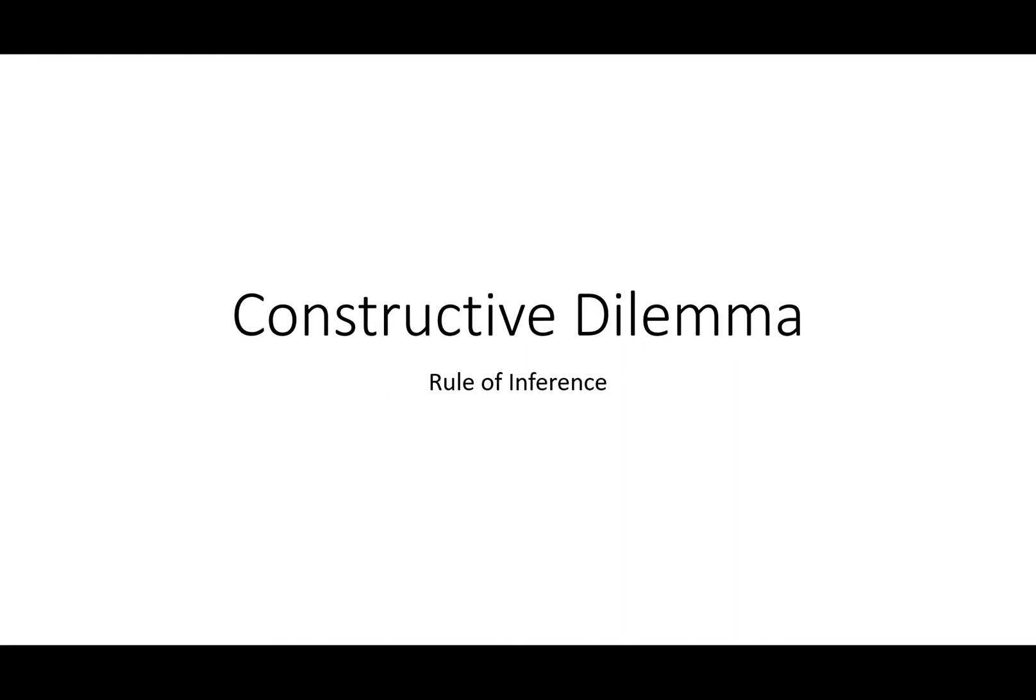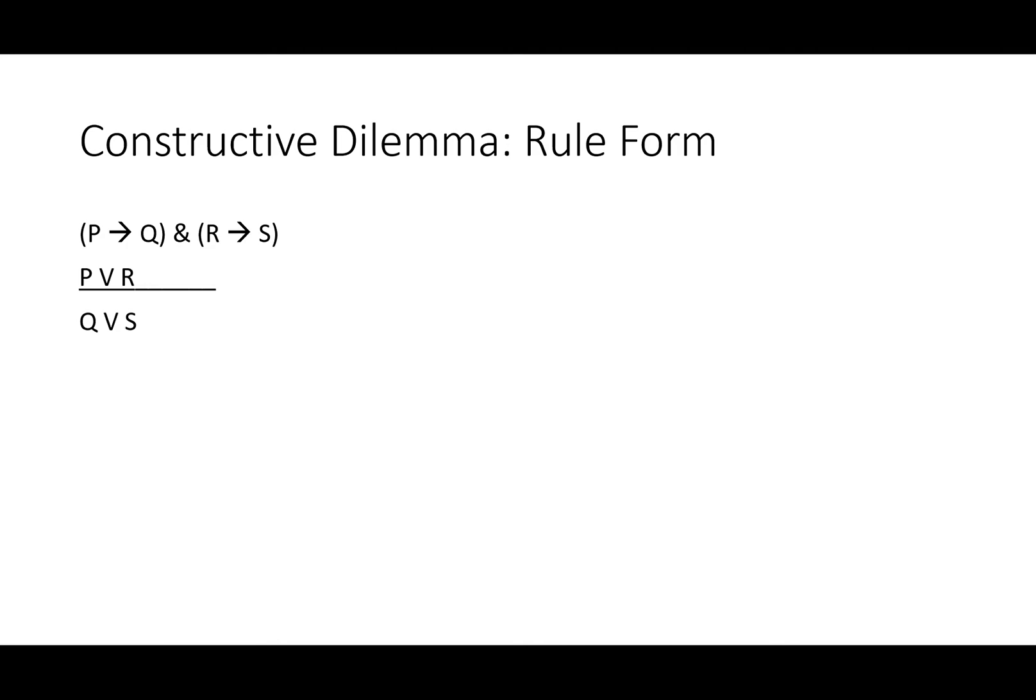Constructive dilemma: a rule of inference. If P then Q, and if R then S, either P or R, therefore either Q or S. Above the line are premises, below it the conclusion they entail. Sometimes you might see this rule written with three premises, though we will usually use just the two.